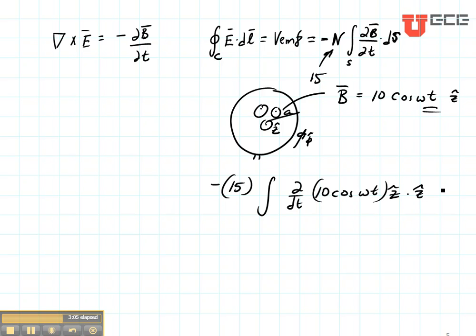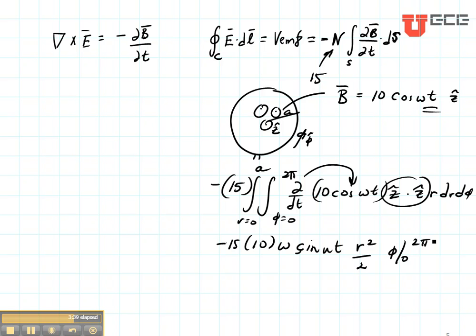Now our dS here is going to be in the Z direction. That's going to be R, dR, d phi. Phi is going to go from 0 to 2 pi and R is going to go from 0 to A. The time derivative is going to give us minus 15 times 10 times omega times the sine of omega T. These are going to dot to 1. The R term is simply going to integrate to R squared over 2. And the phi term is going to integrate to phi from 0 to 2 pi. And this is going to tell us the EMF voltage at the terminals of this loop.